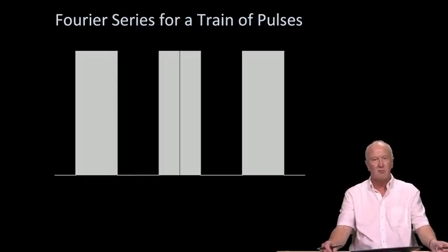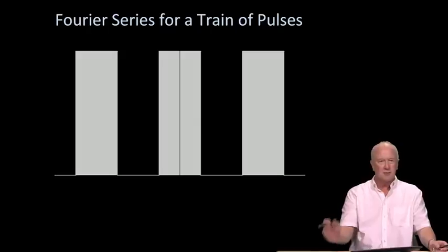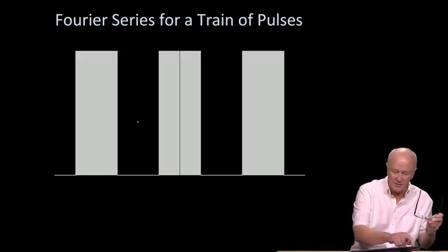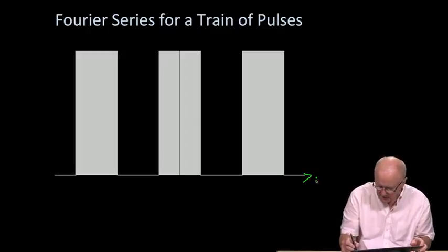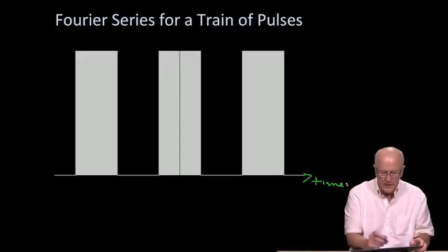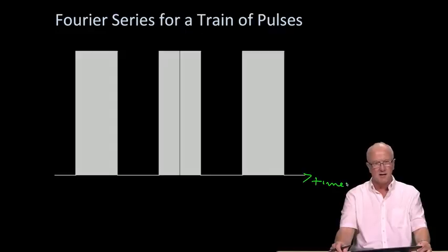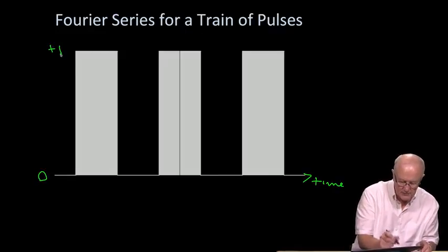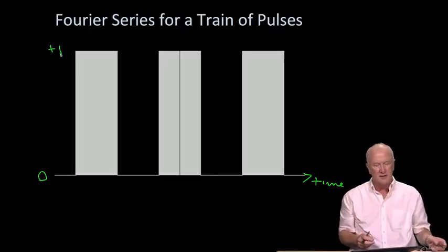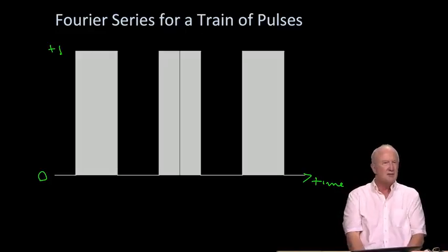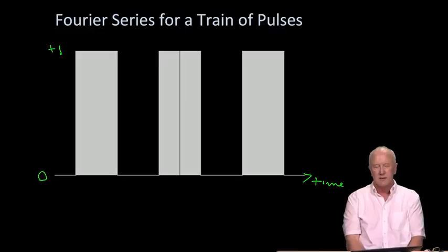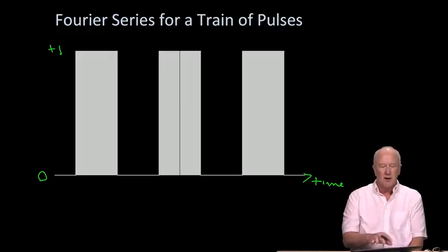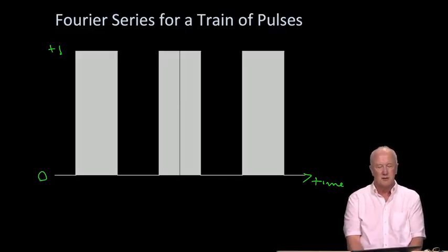So here's a series of pulses, and regard those as being either the nav data or the code. And this is once again a time domain description. And these are chips or bits in the satellite navigation transmission. And they're going, in this case, from zero up to plus one. Now, frequency domain analysis begins with a very interesting question, which is, can I use sine waves, or for that matter cosine waves, to model this train of pulses?